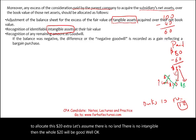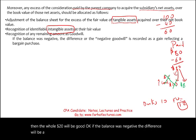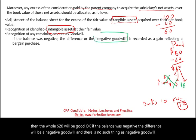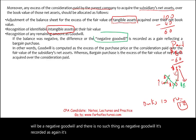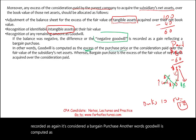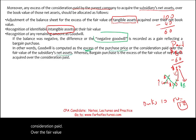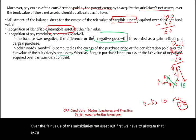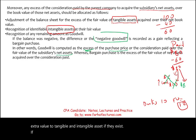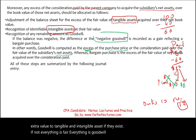If the balance is negative, the difference is recorded as a gain — it's considered a bargain purchase. There is no such thing as negative goodwill. Goodwill is computed as the excess of the purchase price over the fair value of the subsidiary's net assets, after allocating any extra value to tangible and identifiable intangible assets first.